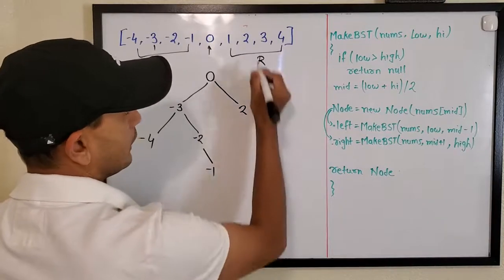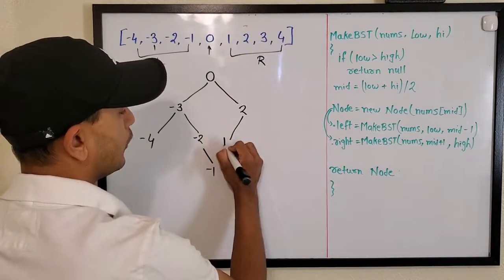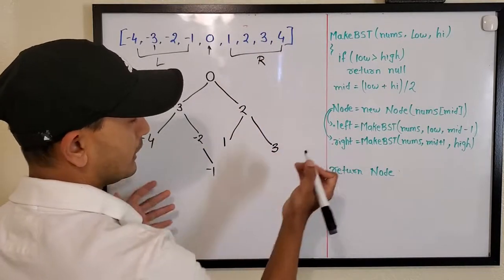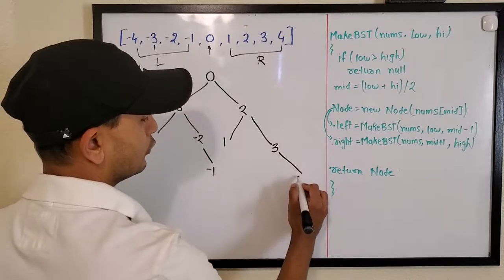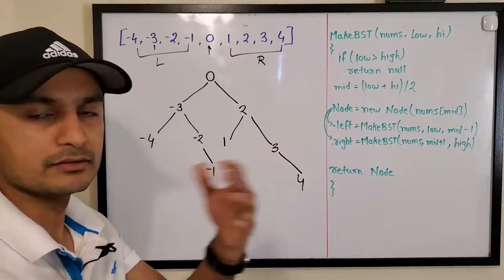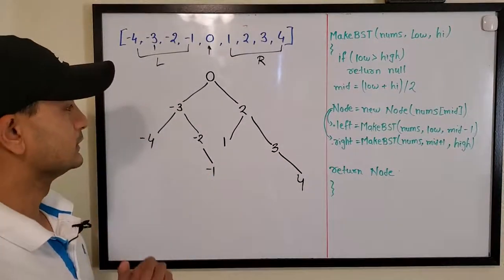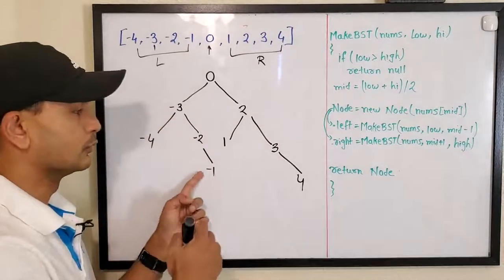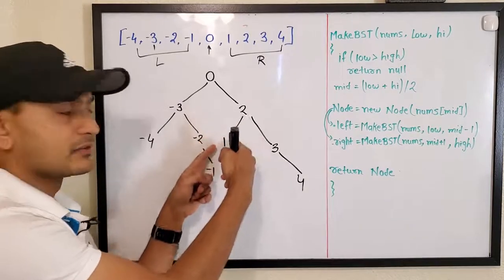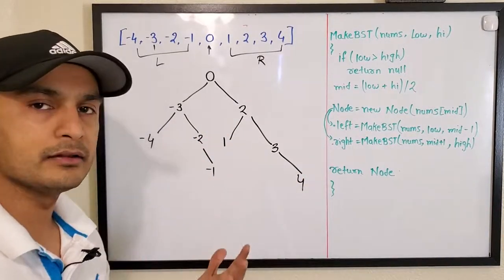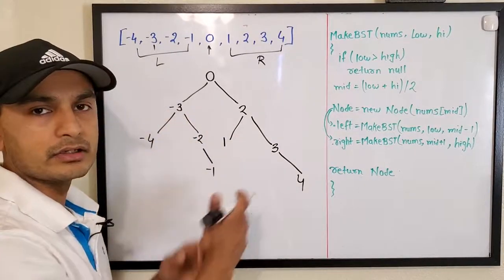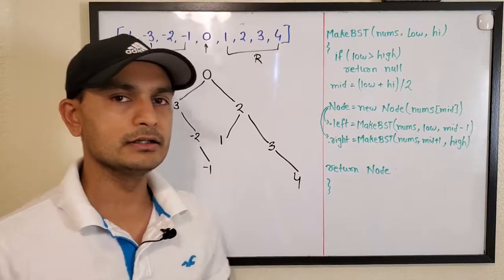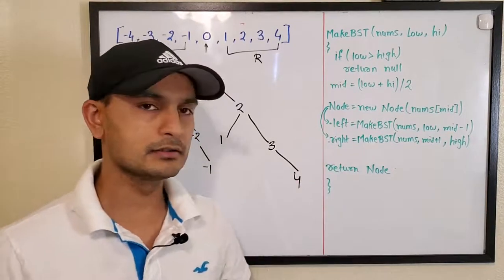For the right side, the middle is two as the root, with one as the left child. Then three is the root of its subtree, with four as the right child and no left child. The height difference between the left and right subtrees is one throughout, confirming it's height-balanced and also satisfies the binary search tree property — exactly what the question requires.